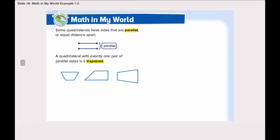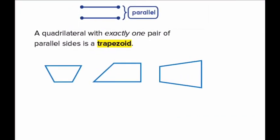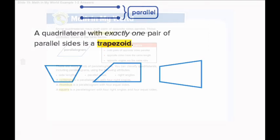Again, quadrilaterals that have sides that are parallel are equal in distance apart, so parallel means equal distance apart. Here are some examples of a trapezoid. Look at the first figure — the top and bottom are parallel. The second figure, also the top and bottom are parallel. And the last one, the right side and the left side are parallel.